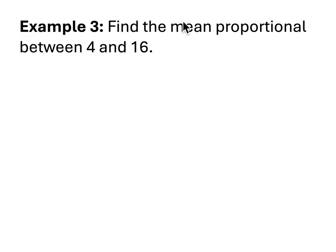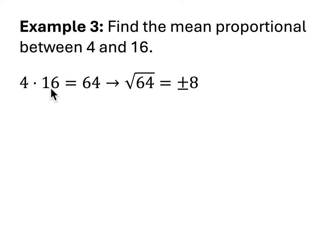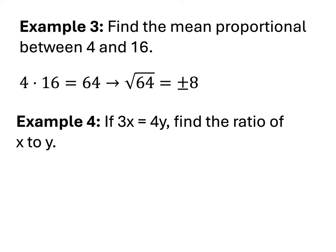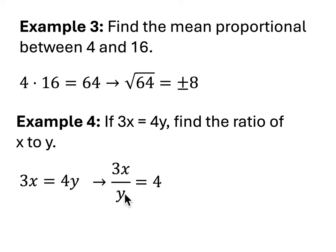The third example says find the mean proportional — that's the geometric mean between 4 and 16. That's the square root of 64, because 4 times 16 is 64, so the answer is positive or negative 8. In example 4, if 3x equals 4y, find the ratio of x to y. Divide both sides by y, then divide both sides by 3, and x to y equals 4 to 3.